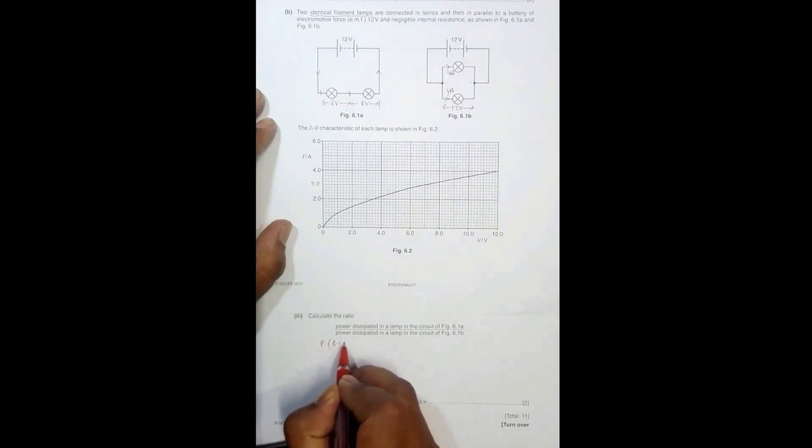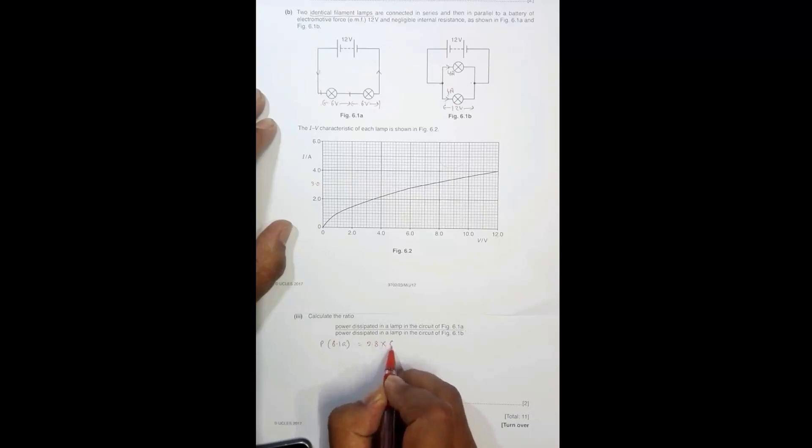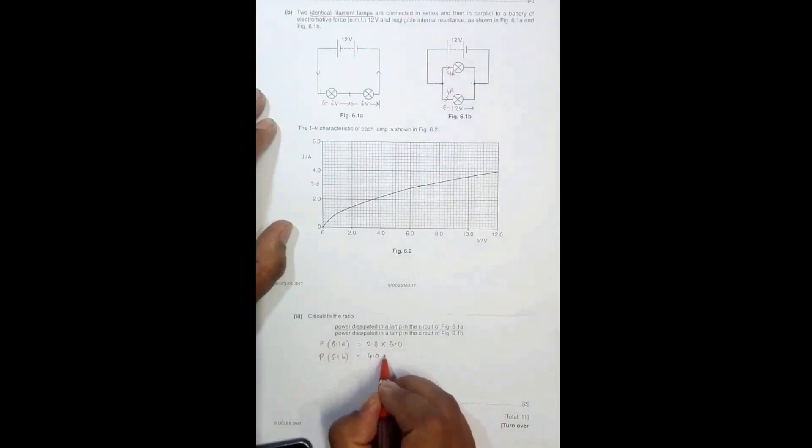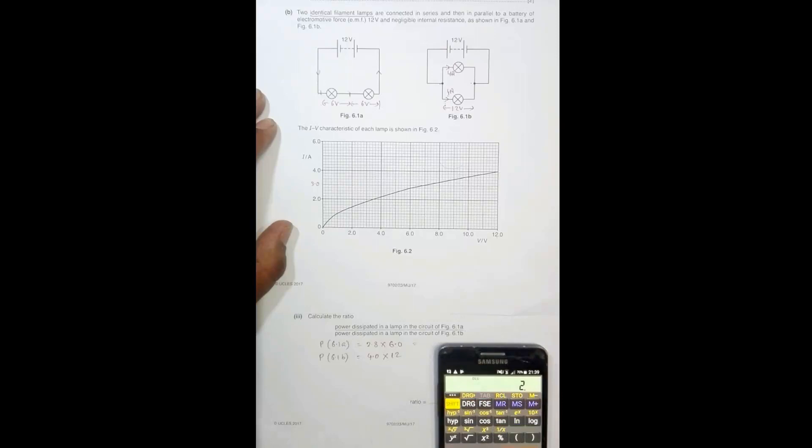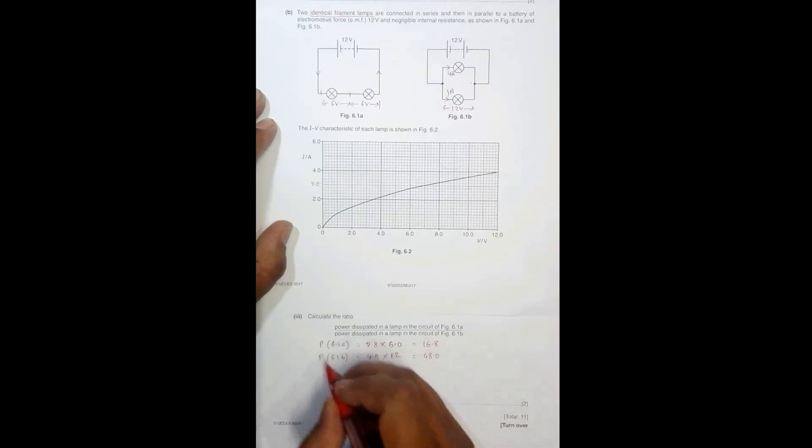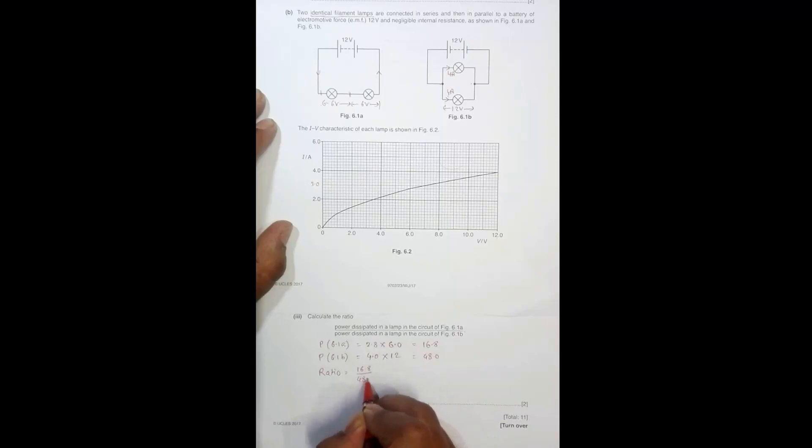Power in 6.1B equals the current across the lamp is 4.0 ampere into the PD which is 12 volt. So 2.8 into 6 equals 16.8, and 4 into 12 equals 48. So the ratio should be 16.8 by 48.0, which equals 0.35. So the ratio is 0.35.